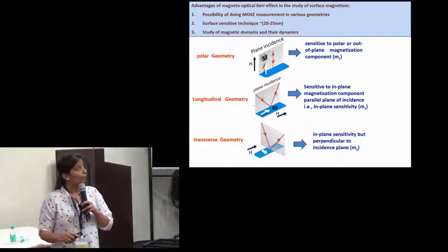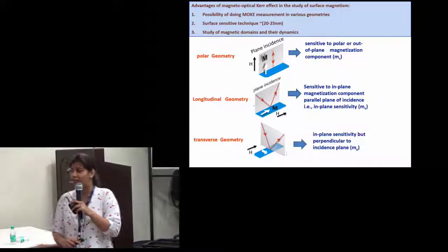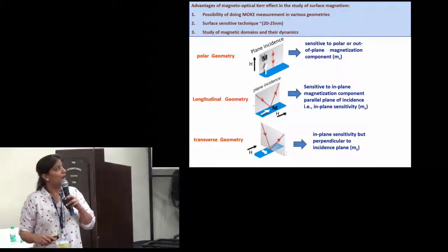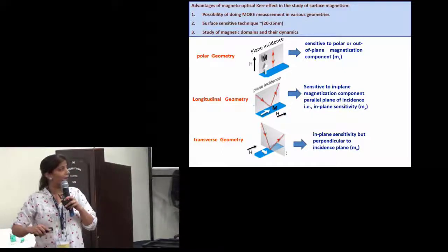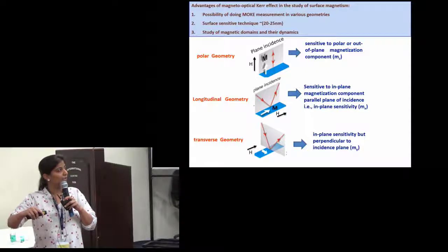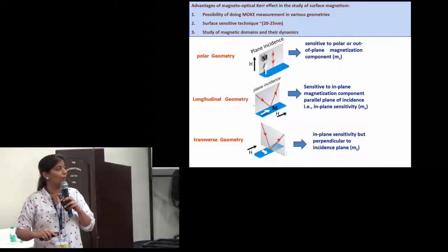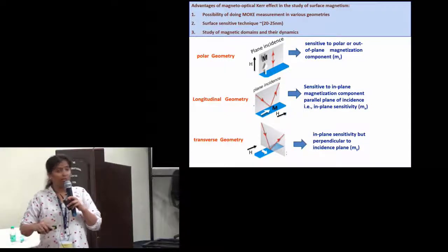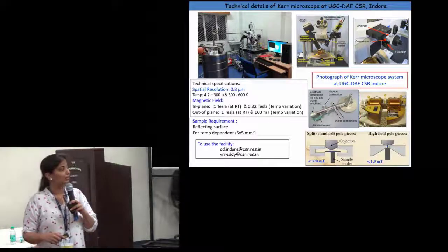The advantages of MOKE are: it is a surface-sensitive technique, and we can perform MOKE in various geometries. For example, we can measure the polar component if the magnetization is out of the plane of the sample. We can also measure longitudinal or transversal components. If the field is applied along the film direction we can see the component parallel to the field, and we can also see the transversal component. So it is possible to measure all three components. This is the system present in our consortium, along with some specifications.